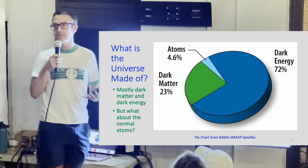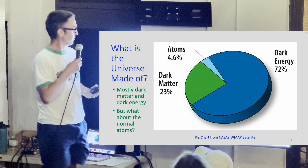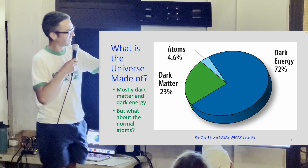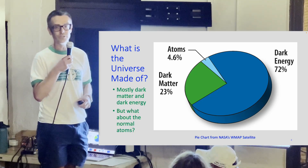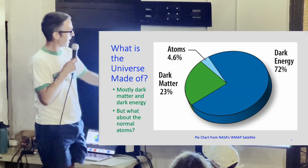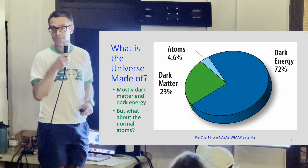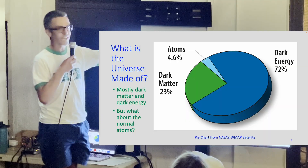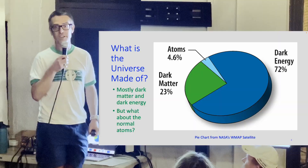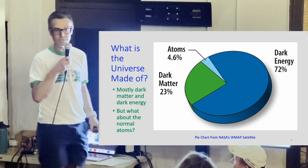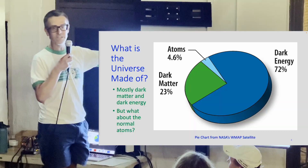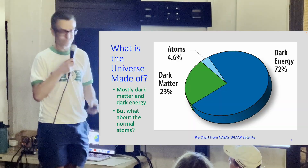Now that we know what the universe looks like, what is it made out of? The vast majority in the present day is dark energy — something like 72% from this pie chart. Dark matter is something like 23%. And then normal atoms — making up all of us, the Earth, the Sun, everything else — that's something like 4% to 5%. So it's a pretty small fraction of the overall universe.